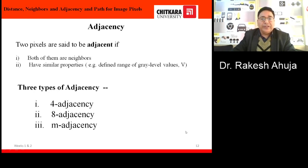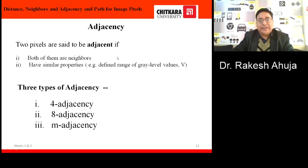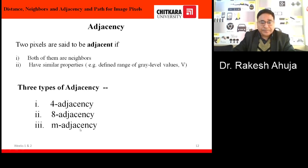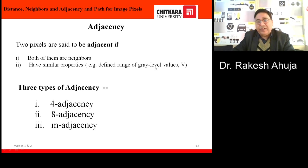Now the major important point is how we can define adjacency. Two pixels, say p and q, are said to be adjacent if two conditions are satisfied: first, both of them are neighbors — neighbor can be calculated as either N4(p), ND(p), or N8(p), depending upon the type of adjacency; second, both of them have the same property, which may be the same gray level value or a range of gray level values.